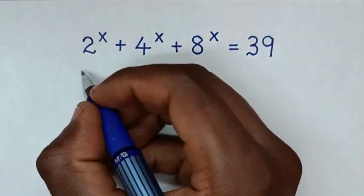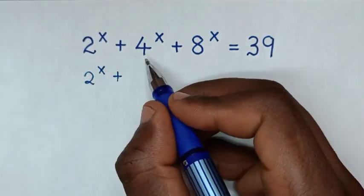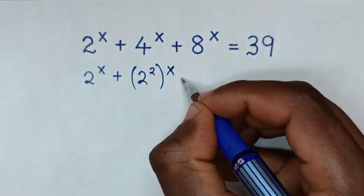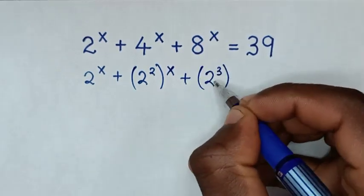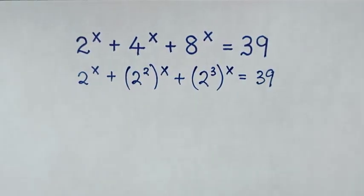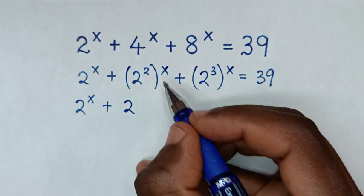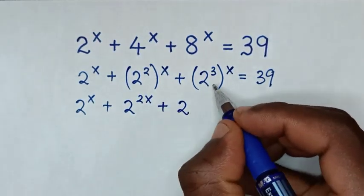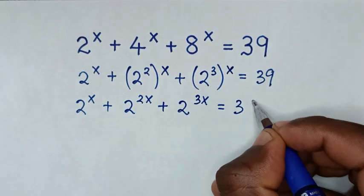First, it will be 2^x, then plus — to have a common base of 2: 4 is the same as 2^2, bracket power x, plus 8 is the same as 2^3, bracket power x, is equal to 39. Then it will be 2^x + 2^(2x) + 2^(3x) = 39.